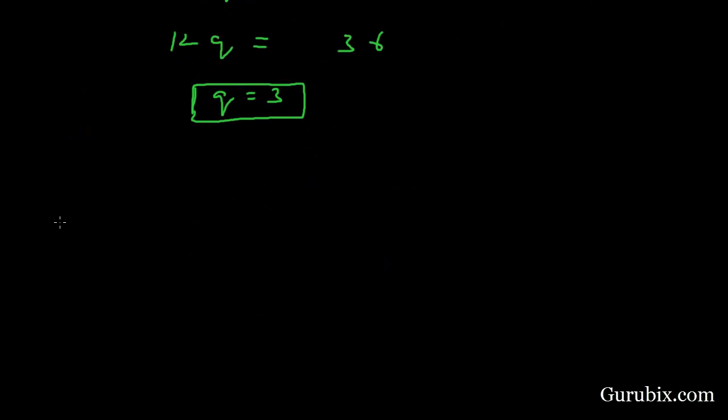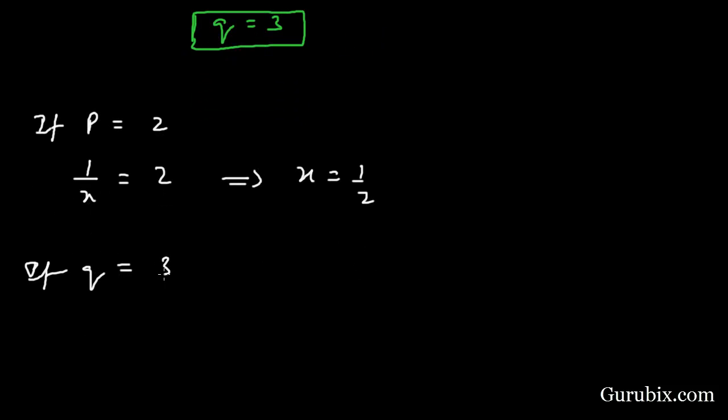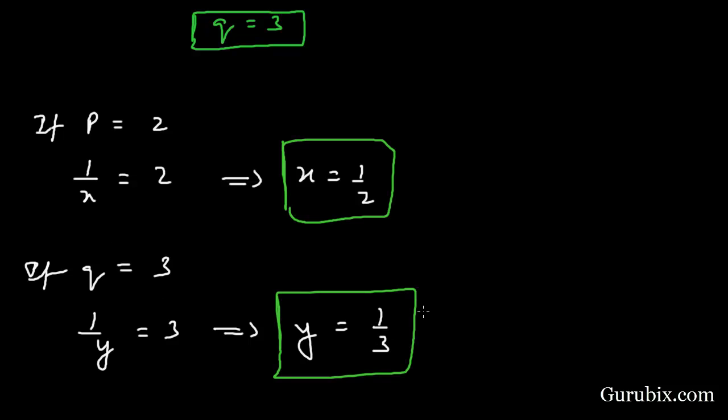can easily find the values of x and y. If p equals 2, then 1 over x equals 2, which implies x equals 1 over 2. Similarly, if q equals 3, then 1 over y equals 3, which implies y equals 1 over 3. This is the solution of the example. Thank you.